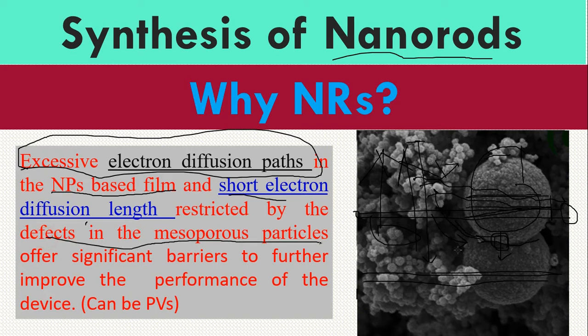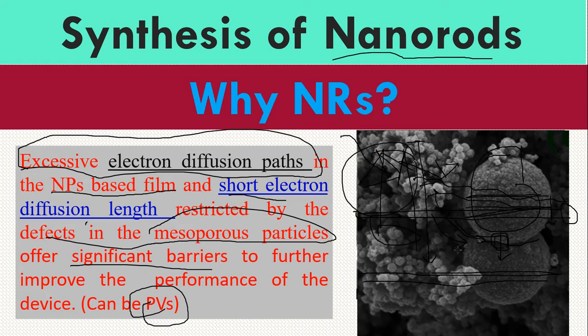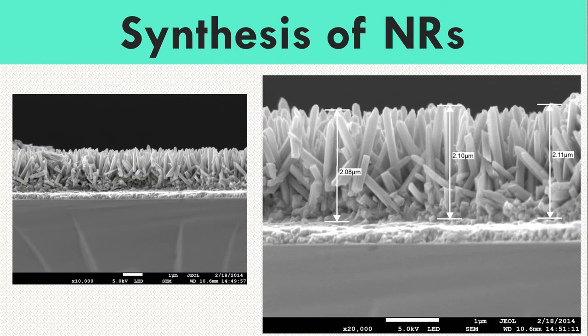Defects in the mesoporous particles offer significant barriers to further improving device performance — particularly in photovoltaics like solar cells, where we generate electrons by solar light. These two issues — excessive diffusion paths and short diffusion length — are why we prefer nanorods over nanoparticles.